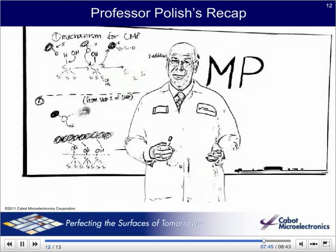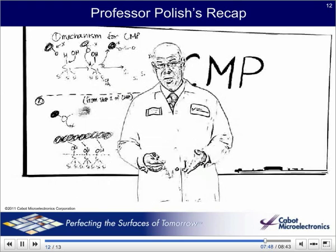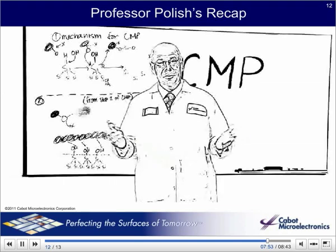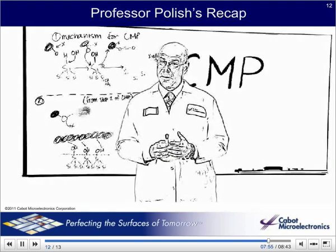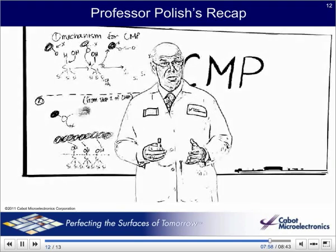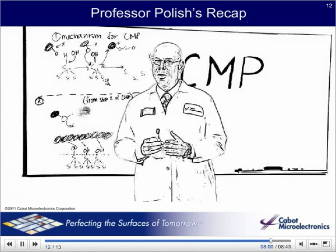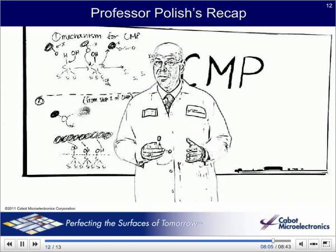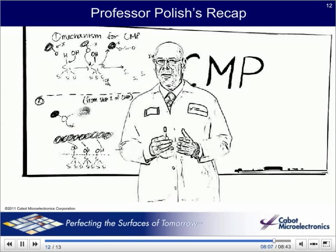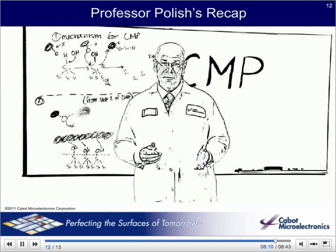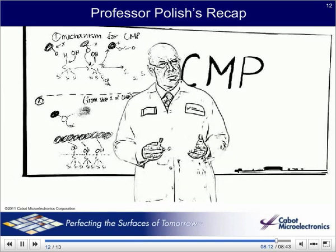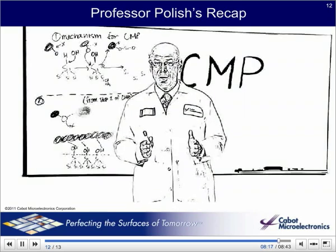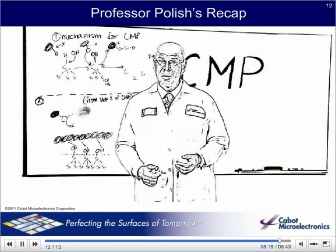Let me recap what you should understand by now. Chips, or semiconductors, represent the brains of modern electronic systems, including cell phones, computers, notepads, GPS, and so on. They consist of microscopic switches called transistors and the nanowires that interconnect them. Hundreds of chips, each containing up to billions of transistors and miles of interconnects, are produced on a silicon disk called a wafer. In order to improve performance and cut costs, it is necessary to make the transistors and interconnects smaller and smaller with each new generation of chip.